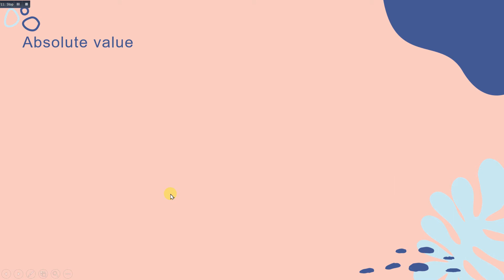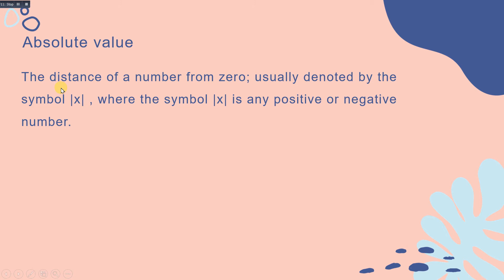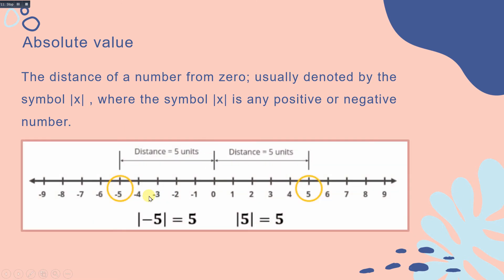Now let us define absolute value. Absolute value is the distance of a number from 0, usually denoted by vertical bars, where x is any positive or negative number. Remember, when we talk about absolute value, we are referring to the distance of a number from 0. On the number line, both negative 5 and positive 5 have the same distance of 5 units from 0.